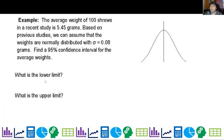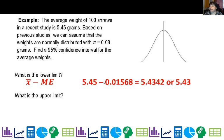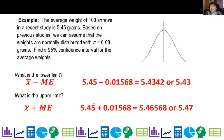So if I wanted to find the lower limit, I'm going to take my mean, my point estimate, and subtract my margin of error. And I get this, 5.45-0.01568, well, roughly 5.43. And if I want to find my upper limit, I just add it. And I get 5.47.